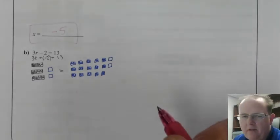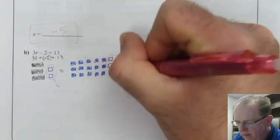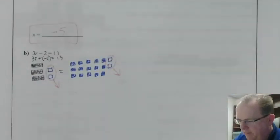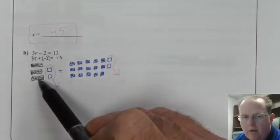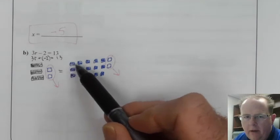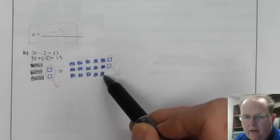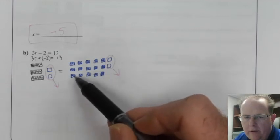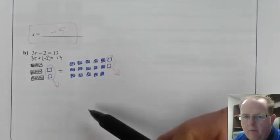At this point, I can then remove my negative tiles. And what that leaves me with, three R's on the left, and 1, 2, 3, 4, 5, 6, 7, 8, 9, 10, 11, 12, 13, 14, 15 tiles on the right.